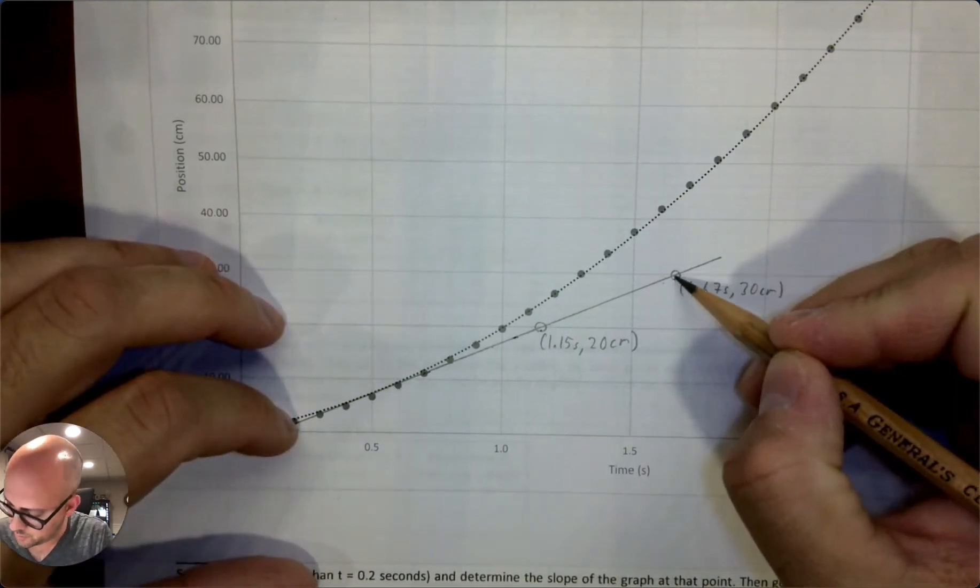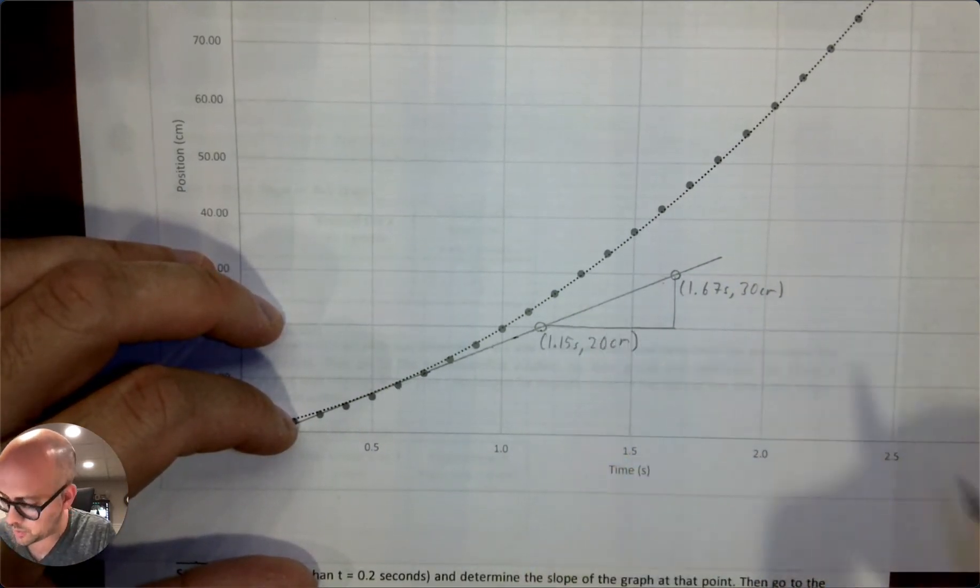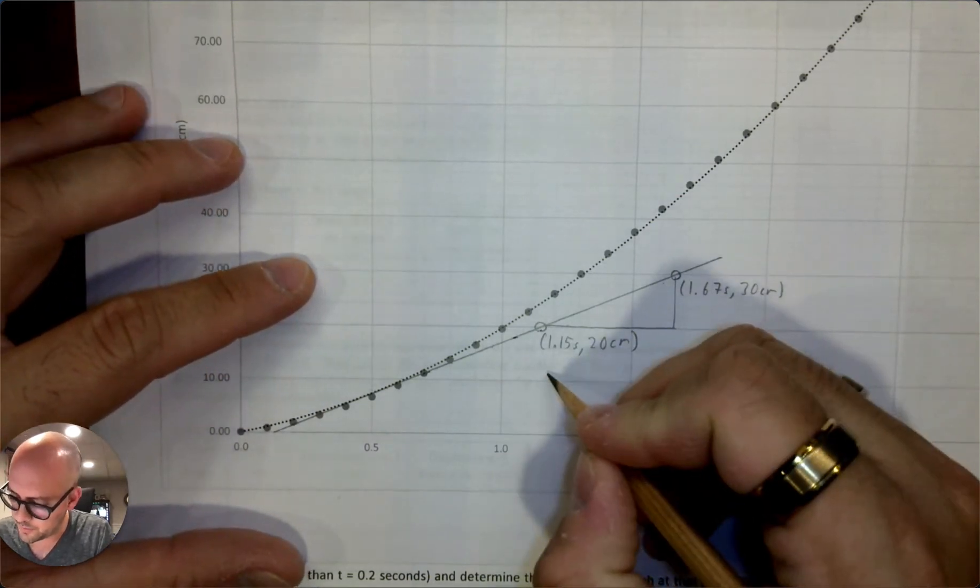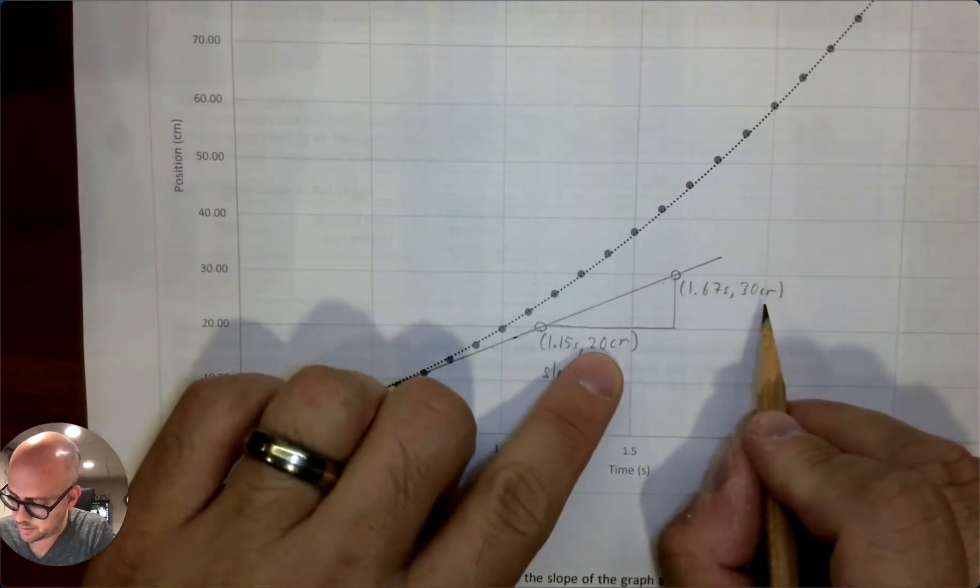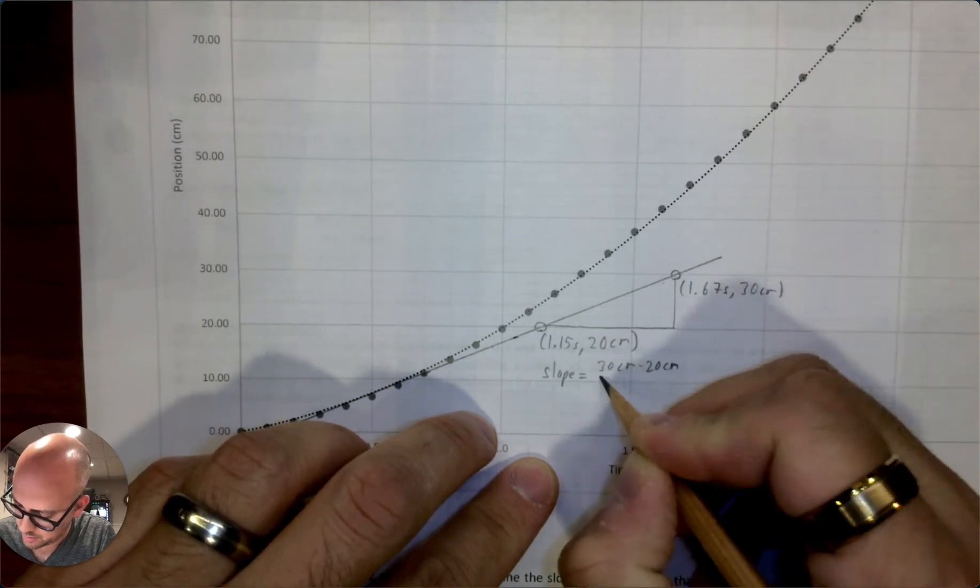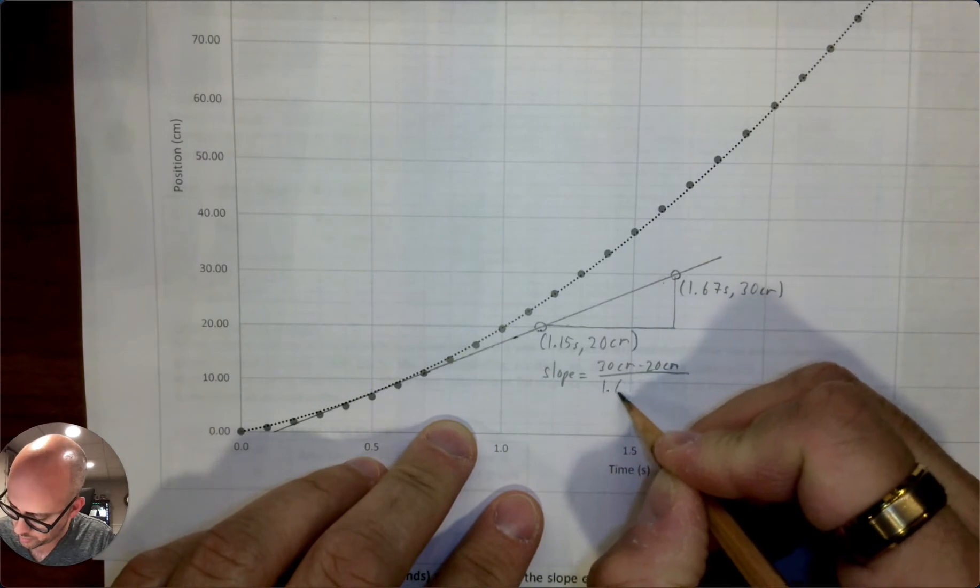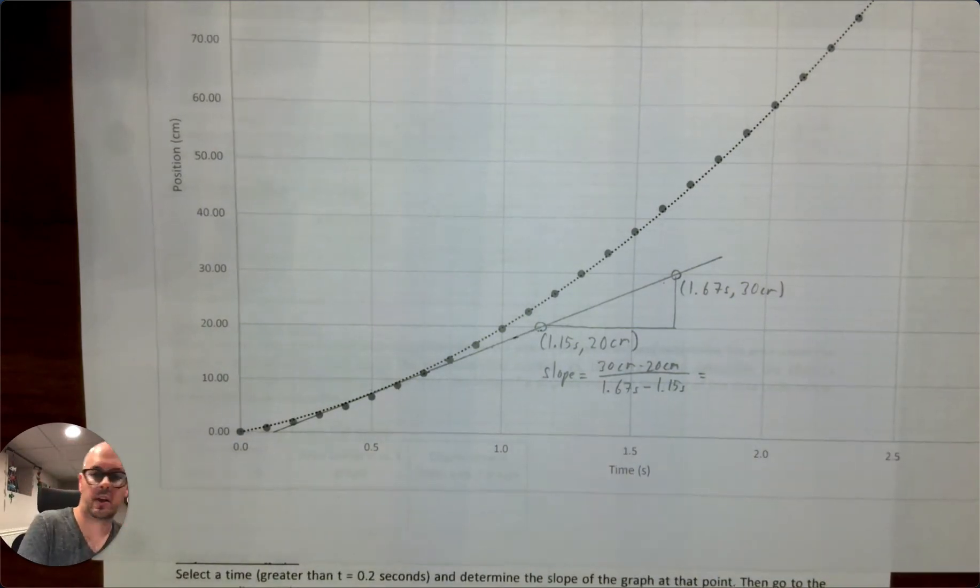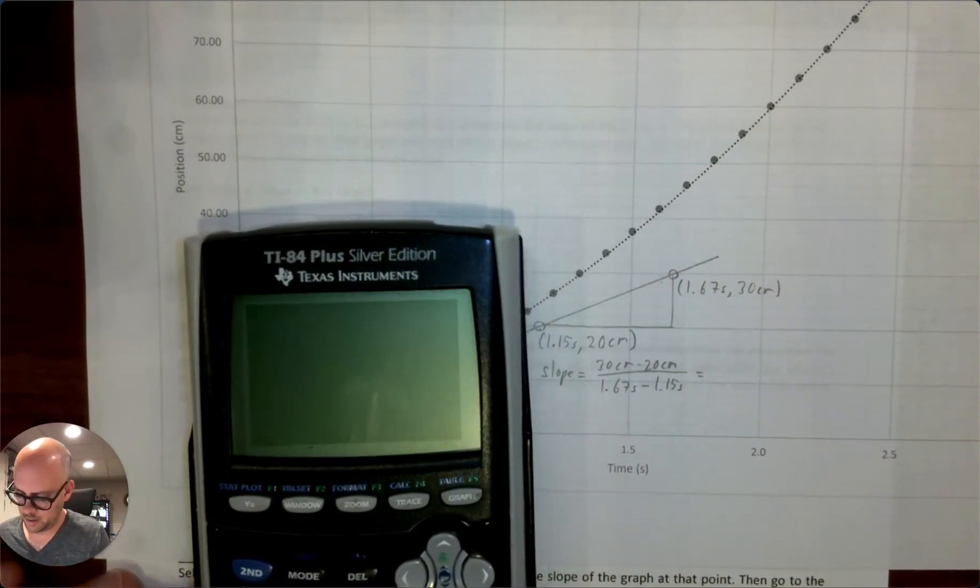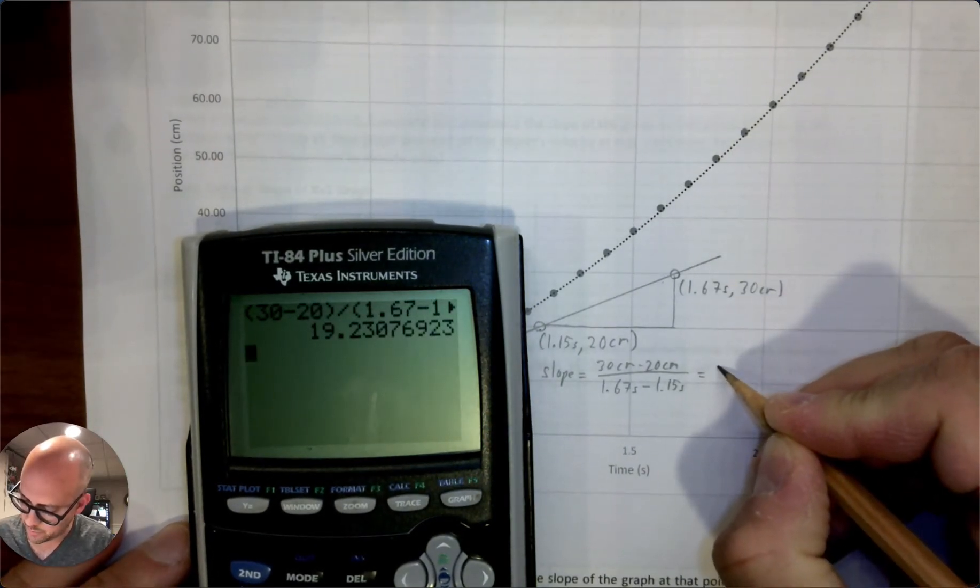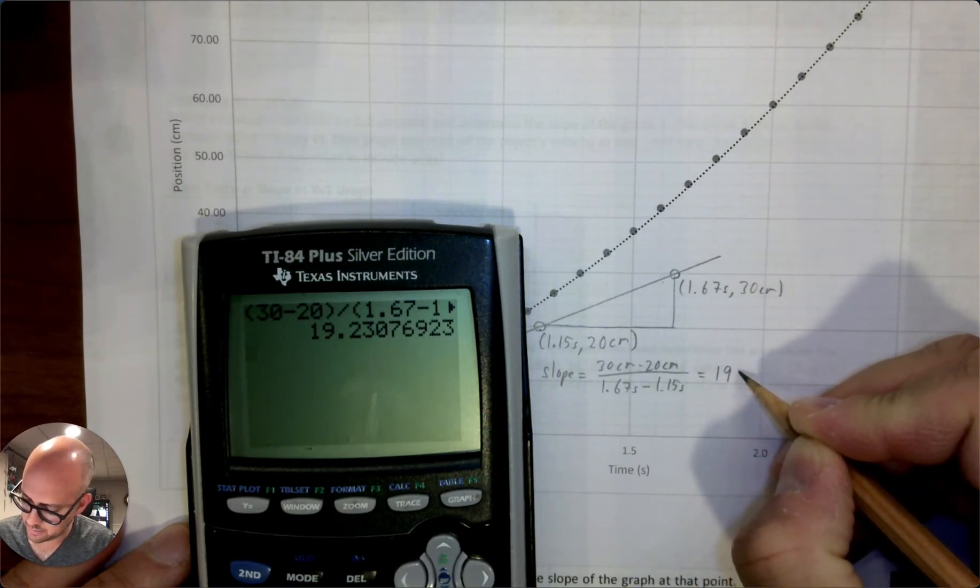So I'm going to find the slope of that. So you can, if you want, you can draw a triangle. You can show your work right here. I think for some of this, it says like show the work to the right of the data table. If you want to do the work right on the graph, that's fine. And so the slope would be the difference between the Y values. So 30 centimeters minus 20 centimeters divided by the difference between the X values. So 1.67 seconds minus 1.15 seconds. And so this is where your calculator comes in handy. So you can do this all at once. So I do 30 minus 20 divided by 1.67 minus 1.15. And so I get 19.23. So 19 is the slope.